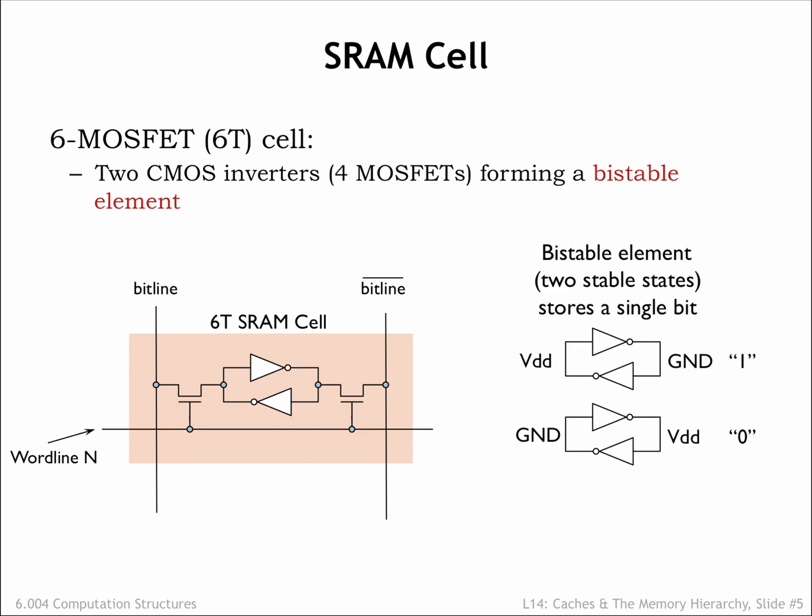The diagram on the right shows the two stable configurations. In the top configuration the cell is storing a 1-bit; in the bottom configuration it's storing a 0-bit. The cell provides stable storage in the sense that as long as there's power, the noise immunity of the inverters will ensure that the logic values will be maintained even if there's electrical noise on either inverter input.